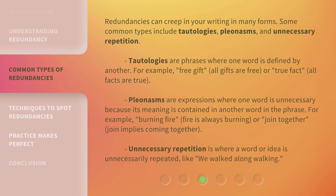Redundancies can creep into your writing in many forms. Some common types include tautologies, pleonasms, and unnecessary repetition. Tautologies are phrases where one word is defined by another. For example, 'free gift' — all gifts are free. Or 'true fact' — all facts are true.